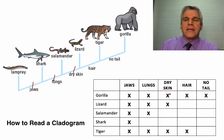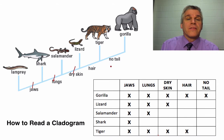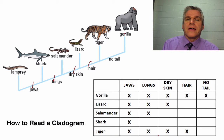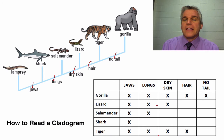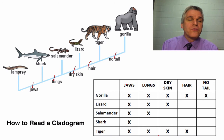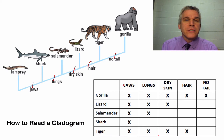Now, to separate these last three, we see that the gorilla has hair and the tiger has hair. The lizard does not have any hair. So that separates the tiger and the gorilla from the lizard. And lastly, the gorilla does not have a tail, whereas the tiger does.